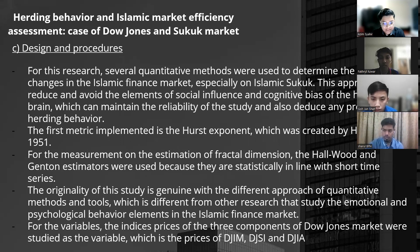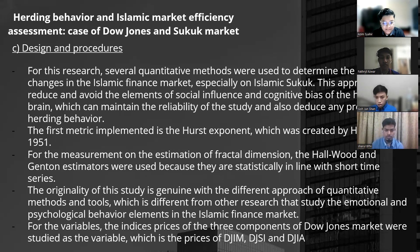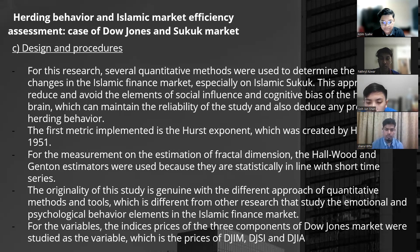The first metric implemented is the Hurst exponent, created by Hurst in 1951 and later rescaled in terms of its statistical range in 1969 by Mandelbrot and Wallace. It is used to reveal the efficiency of the stock market over time and the presence of herding behavior. The Hurst exponent was also used on the Islamic sukuk markets. For estimation of fractal dimension, the Holwold and Gantin estimators were used because they are statistically in line with short time series.